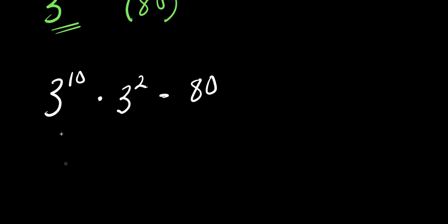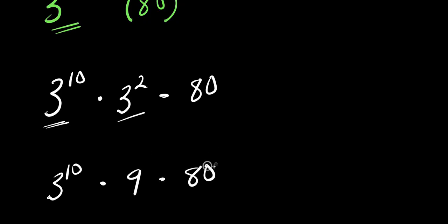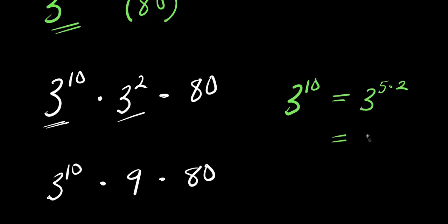Right now I need to find the value of 3 power 10. Note that 3 power 2 is 9. Finding the value of 3 power 10: this equals 3 power 5 times 2, so that is 3 power 5 raised to the power of 2. And 3 power 5 is 3 times 3 times 3 times 3 times 3, which is 243. So 3 power 10 equals 243 squared.